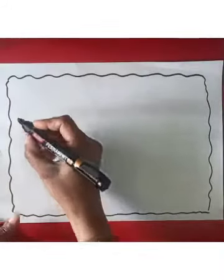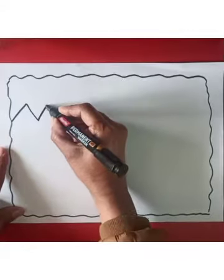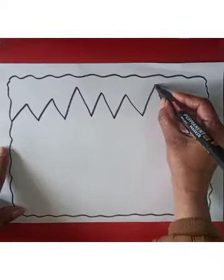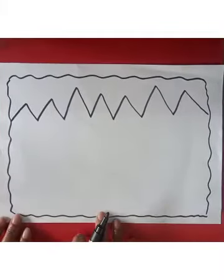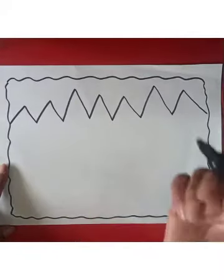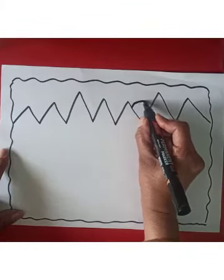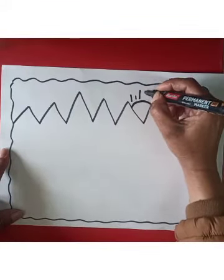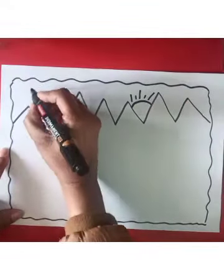So first of all we will draw mountains like this. Behind the mountains there is a sun, and we will draw the sun like this because the sun is behind the mountains. Birds are flying in the sky.